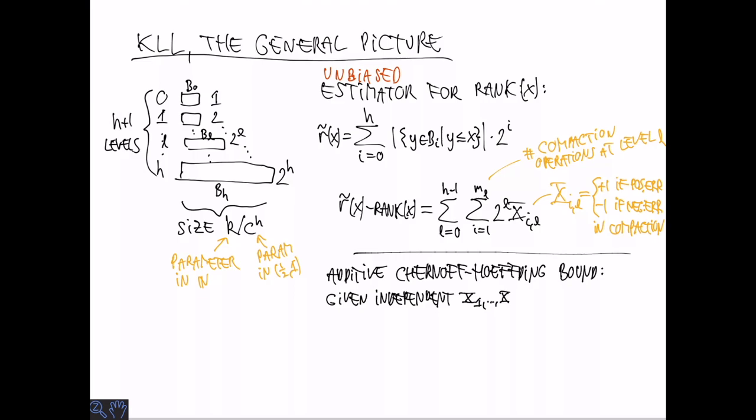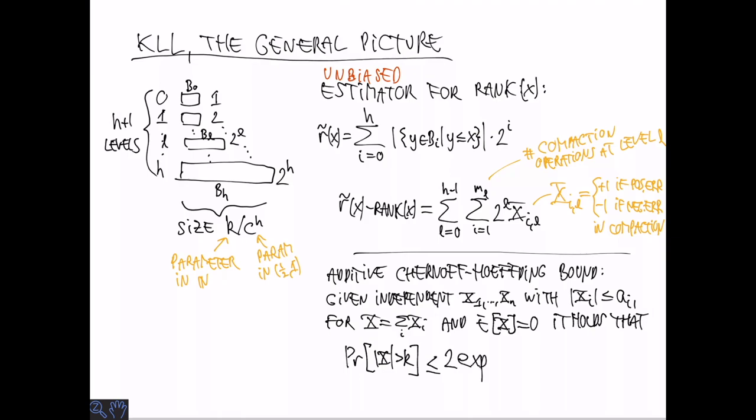And this looks a lot like the kind of things we have seen how to bound using Chernoff bounds. And what we need in this case is a slightly different variant that I didn't talk about before, but it's in the book. So let me just state the special case we need here. So we have a bunch of independent random variables. All of them are bounded by some value AI, could be different for each of them. And we look at the sum of these random variables assuming that the expectation is zero. So now the probability that the absolute value is greater than K is exponentially small in K squared. And the number we need to divide K squared by is the sum of the square of all the AIs multiplied by 2. So this is fact 1.4 from the book, or a special case of that.